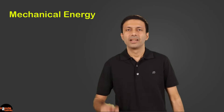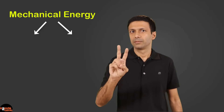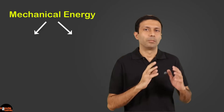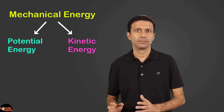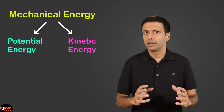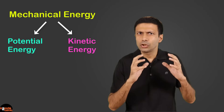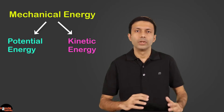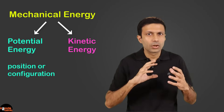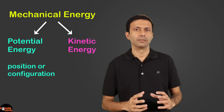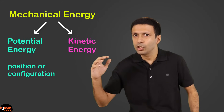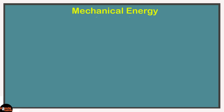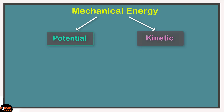Mechanical energy can be divided into two types: potential energy and kinetic energy. Potential energy is the energy stored in a body due to its position or its configuration, and kinetic energy is the energy of a moving body. So let's go ahead and put these on our concept board.